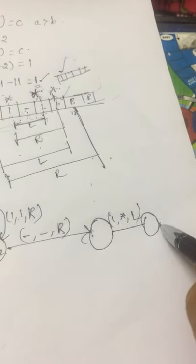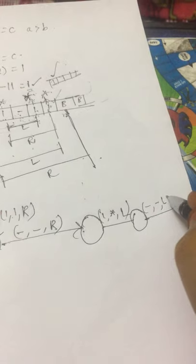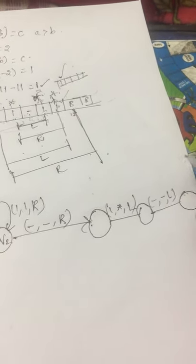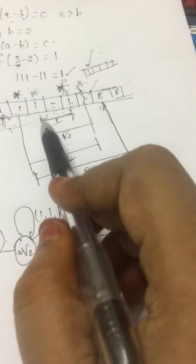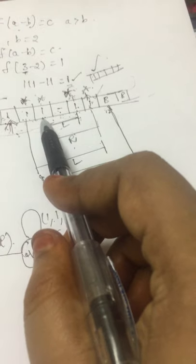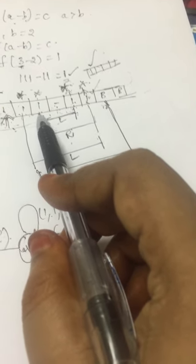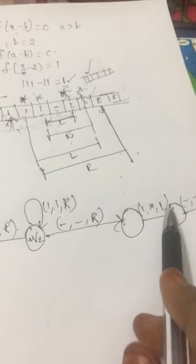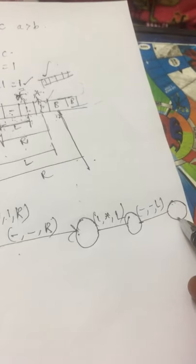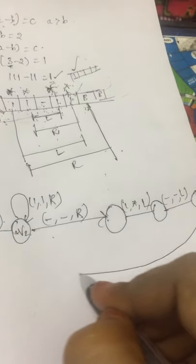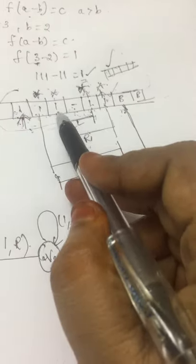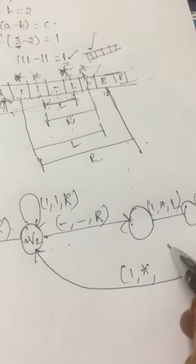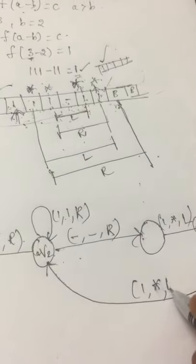While moving to the left we are going to get the minus symbol — that minus will remain as minus and we still move to the left direction. When moving left we are going to get this 1 on the left side. We are going to convert this 1 to star and again move to the right direction — that means we are following the same process as before. That is the reason we draw a loop here.